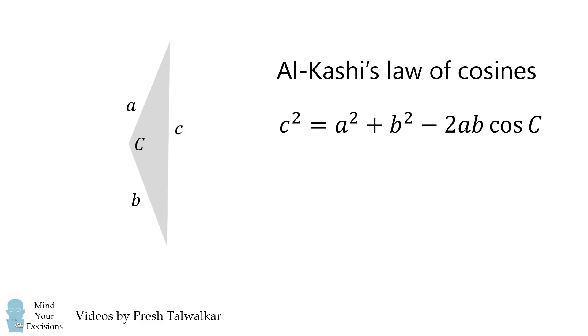Next, let's consider a triangle and use Al-Kashi's law of cosines. It states the following. If we make this an isosceles triangle, where both of these are equal to the radius, and the central angle is equal to theta, we get the following version. We'll use these formulas to solve the problem.